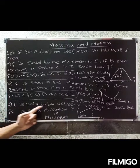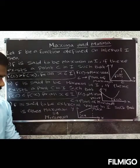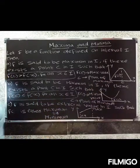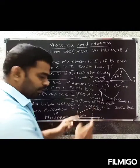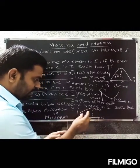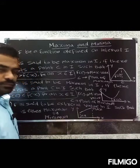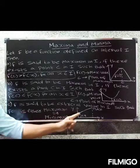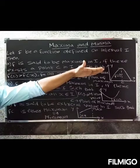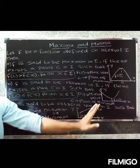Third definition: f is said to have an extreme value on I if there exists a point c such that f of c is either a maximum or a minimum. So the extreme value condition covers both: f of c is either a maximum point or a minimum point — either maximum or minimum.